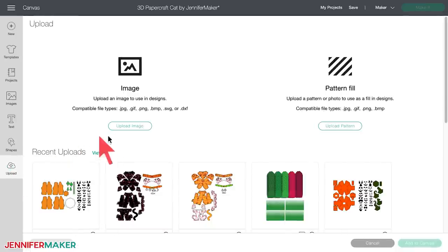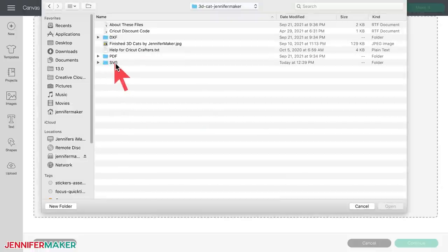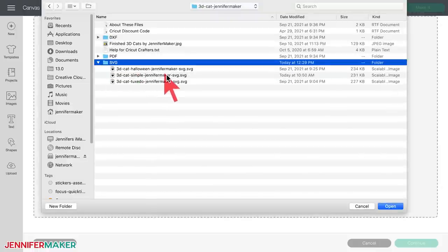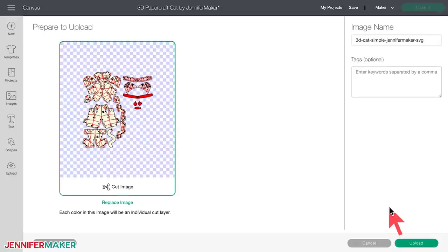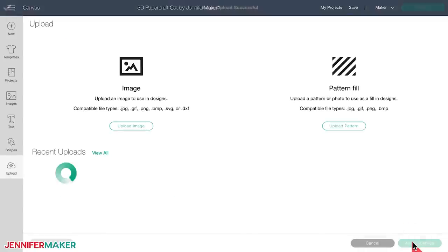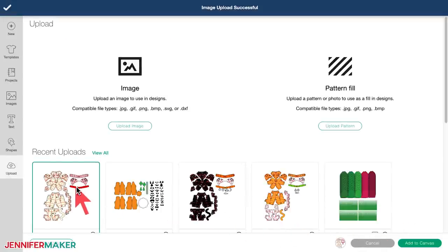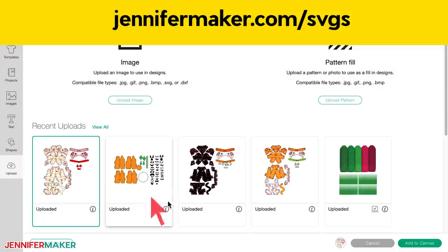First, upload one of the three SVG cut files from my library to Cricut Design Space. If you're unsure how to unzip and upload files, please watch my SVGs Made Simple training series over at jennifermaker.com slash SVGS.